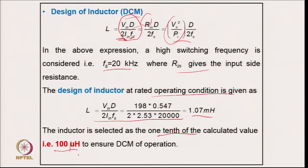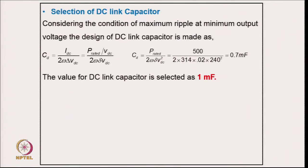Taking a value of around 100 μH ensures discontinuous mode even at lowest input voltage and highest power, where the current tends toward its maximum. If the converter goes into continuous conduction, the inherent power factor correction is lost. Therefore, sufficiently low inductance must be chosen so that under any extreme operating condition the converter remains in discontinuous conduction and the inherent power factor correction condition is satisfied.